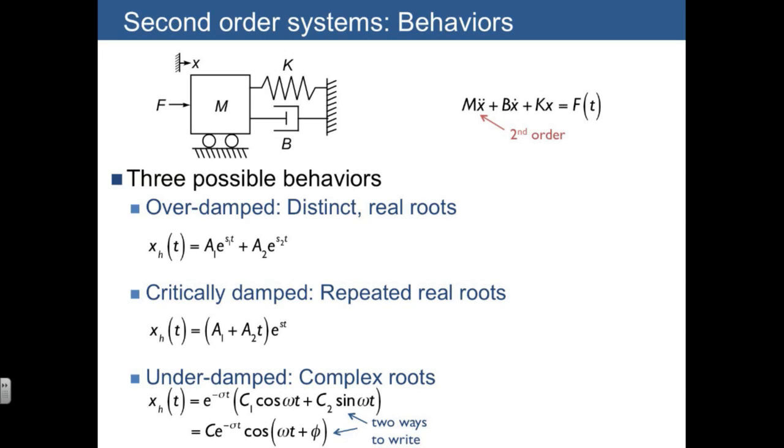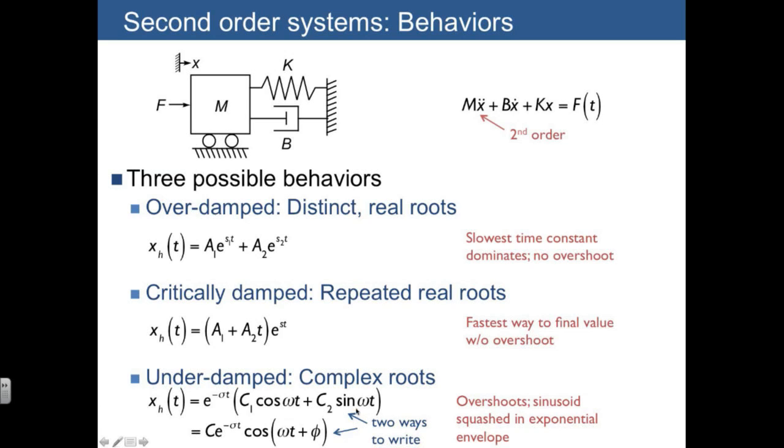What's worth remembering is that in the overdamped case, the slowest time constant of the two time constants is going to dominate, and there's no overshoot in this case. For the critically damped case, this often resembles the overdamped case somewhat, but this is the fastest way to achieve or to reach the final value without having any overshoot. And then finally, the underdamped case has overshoot, meaning that these sinusoids are going to cause oscillations on our way to the final value. And you can think of the underdamped case as being a sinusoid squashed inside an exponential envelope.